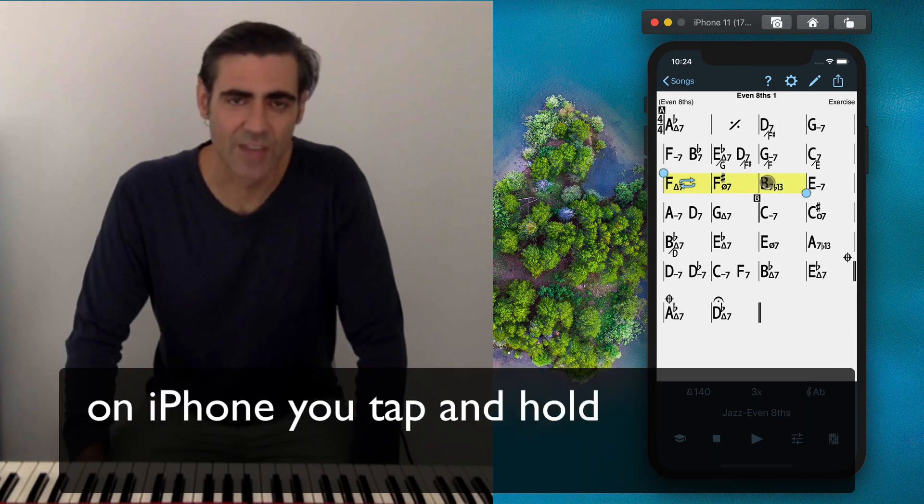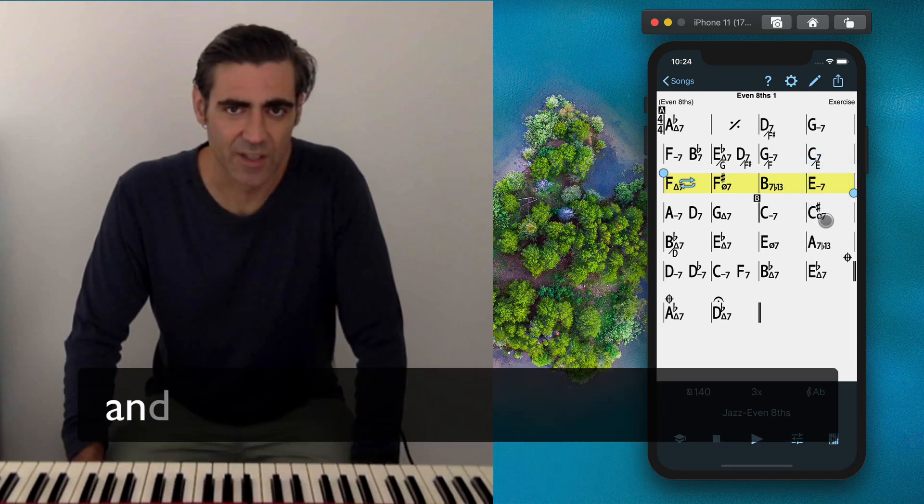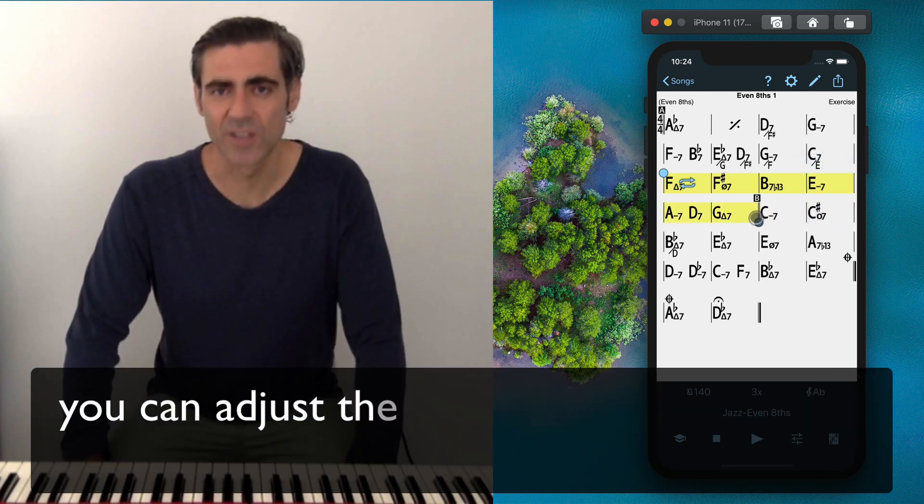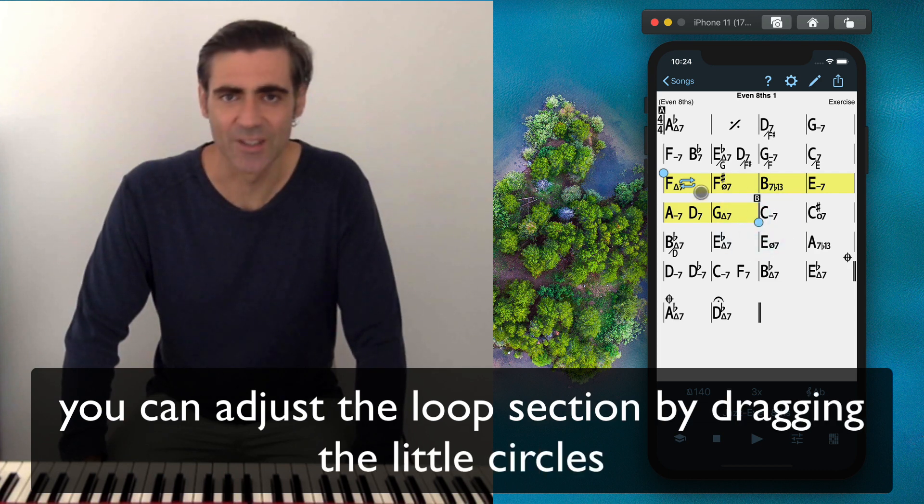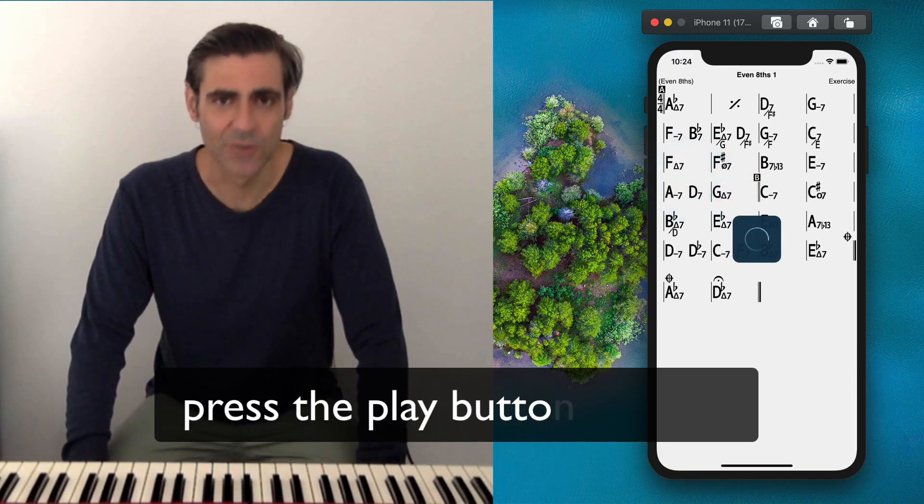On iPhone, you'll tap and hold the starting measure and then drag to extend the selection. You can adjust the loop section by dragging the little circles. Press the play button to start.